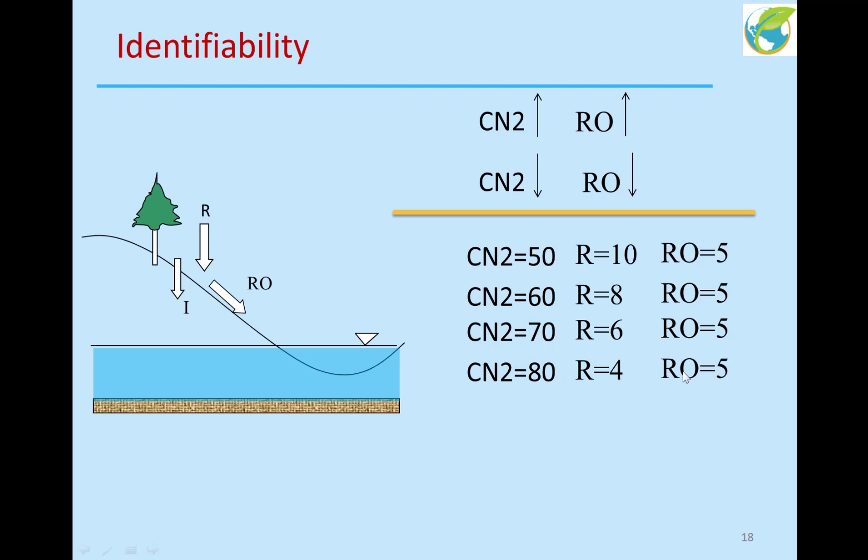And I can go the other way. I can decrease CN2, increase rainfall, get the same runoff. Decrease it to the minimum value, increase rainfall, and I get the same runoff. So the point here is that I cannot fit CN2 and rainfall at the same time because I cannot identify them independently. I always have the same runoff.